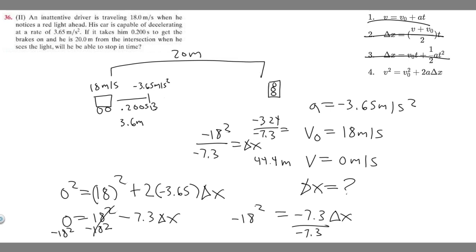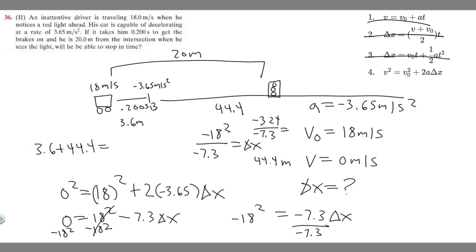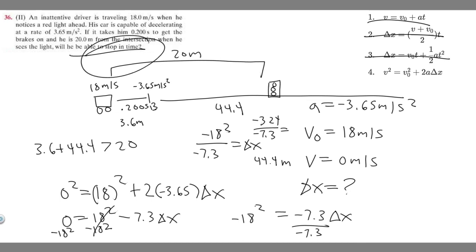This braking distance is 44.4 meters, but he only has 20 meters to the intersection. He also traveled 3.6 meters during the reaction phase. Adding those up: 3.6 + 44.4 = 48 meters total stopping distance — which is greater than 20 meters. So he is not going to be able to stop in time. The total distance it takes him to stop is greater than the 20 meters available before the intersection.